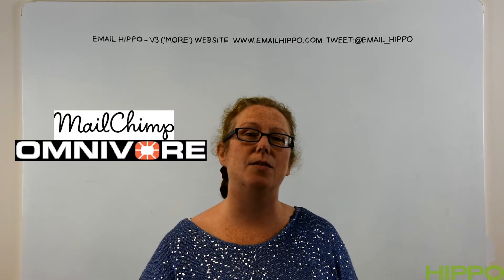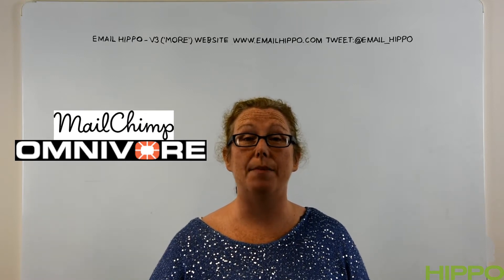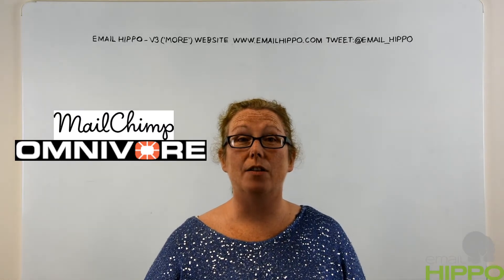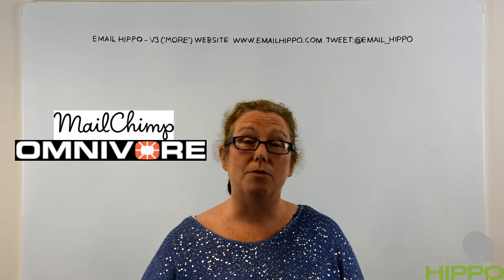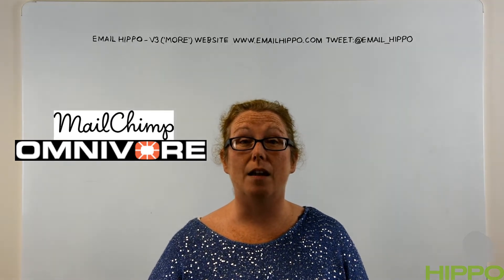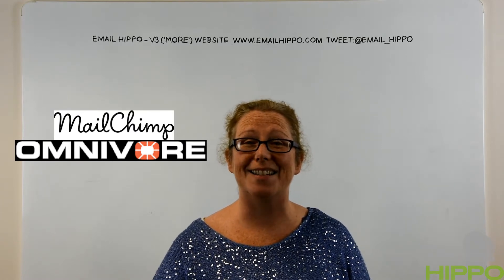Hello there, I'm Jo from Email Hippo and I'm here to tell you all about the MailChimp Omnivore Warning and what you can do to get past it. When you get a MailChimp Omnivore Warning it's because you've loaded up emails onto MailChimp that MailChimp doesn't like. Think of Omnivore as MailChimp's filter — it's stopping MailChimp from dealing with rubbish data. If MailChimp has rubbish emails in its system it can affect MailChimp's reputation, and that's why Omnivore is there. It's just to stop people casting awful, ridiculous amounts of bad data to MailChimp.